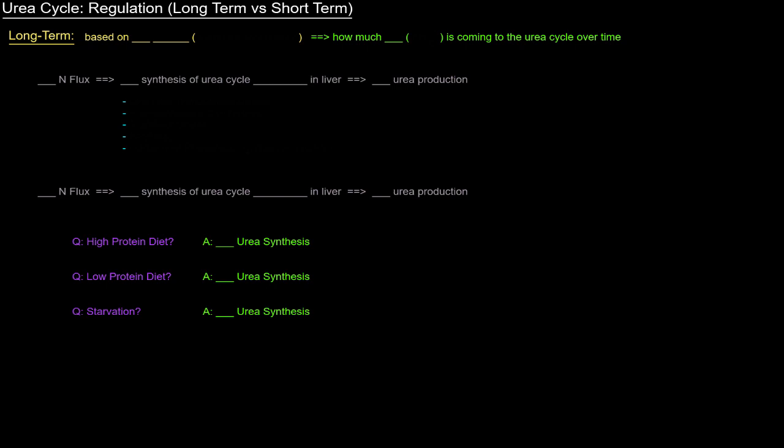Long-term regulation is based on nitrogen flux, which is basically substrate availability. What I mean by that is how much nitrogen, or specifically how much ammonium ion, is coming to the urea cycle over time. Because the whole point of the urea cycle is to take that ammonium ion, process it, detoxify it, put it into urea, and excrete it safely.